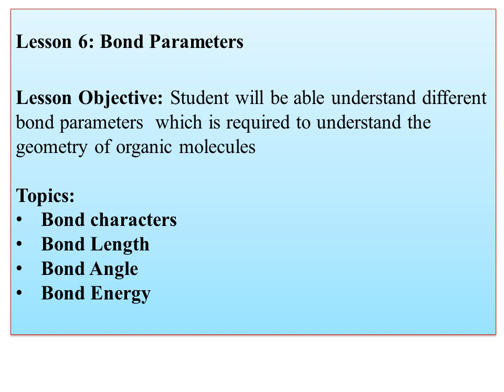Lesson number six covers bond parameters. The student will be able to understand different bond parameters, which are required to understand the geometry of organic molecules. These bond parameters also affect the reaction mechanism. If the compound contains a double bond, or a triple bond, or a lone pair of electrons, each will affect the mechanism differently. Bond character, bond length, bond angle, bond energy, and electron activity are the parameters involved. Hybridization also affects the rate of reaction. Therefore it is necessary to understand the different bond characters present in a particular organic molecule.